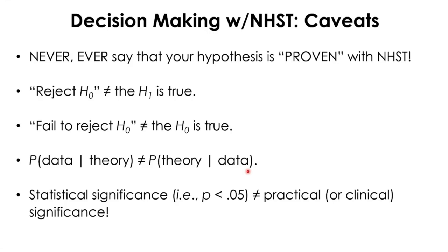Finally, a statistically significant result is not necessarily practically significant. However, if a result is not statistically significant, then it is very likely not practically significant either. In any circumstances, you should not equate a statistically significant result with an important result, because the p-value itself does not tell us how important an effect actually is, nor whether the hypothesis of interest is true or false. A very small and unimportant effect can be statistically significant with a very large number of samples, and by the same token, a very large and important effect can be missed simply because the sample size is too small.